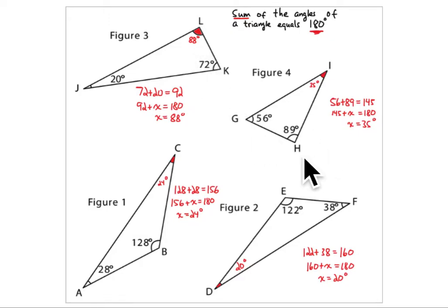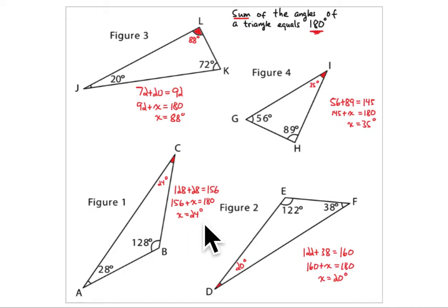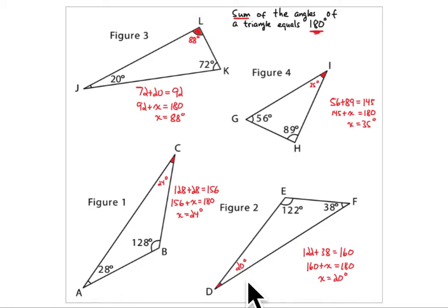The rest are much the same. 56 plus 89 degrees is 145 degrees, so you need an additional 35 degrees to reach 180. The next one: 128 plus 28 degrees equals 156, so you need an additional 24 degrees. And the last one: 122 plus 38 equals 160 degrees, meaning that angle must be 20 degrees.